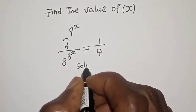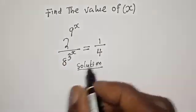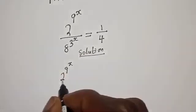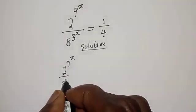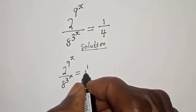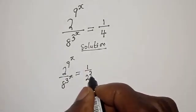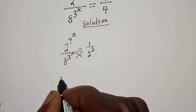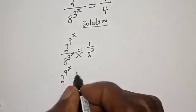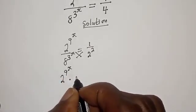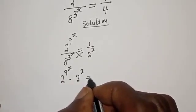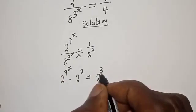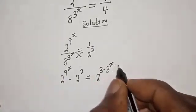Solution. We have 2 raised to power 9 raised to power s, over 8 raised to power 3 raised to power s, is equal to 1 over 4, which can be written as 2 raised to power negative 2. Then let's cross multiply. This gives 2 raised to power 9 raised to power s, multiplied by 2 raised to power 2, is equal to 8 raised to power 3 raised to power s, which can be written as 2 raised to power 3, raised to power s.